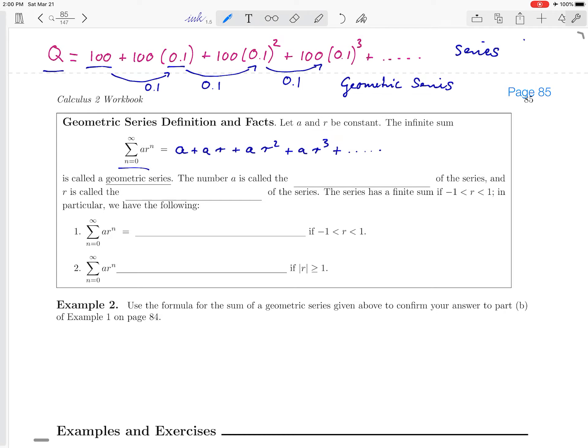In our drug example, we had a was equal to 100 and r was equal to 0.1. This is an example of a geometric series. This number a that starts out is called the first term of the series, and r is called the common ratio of the series. And it makes sense to call this a common ratio because you multiply by this number r to get from one term to the next. So in our drug example, that was 0.1.